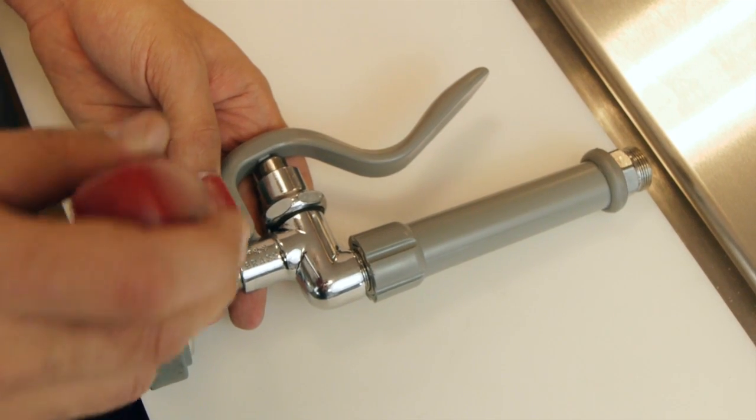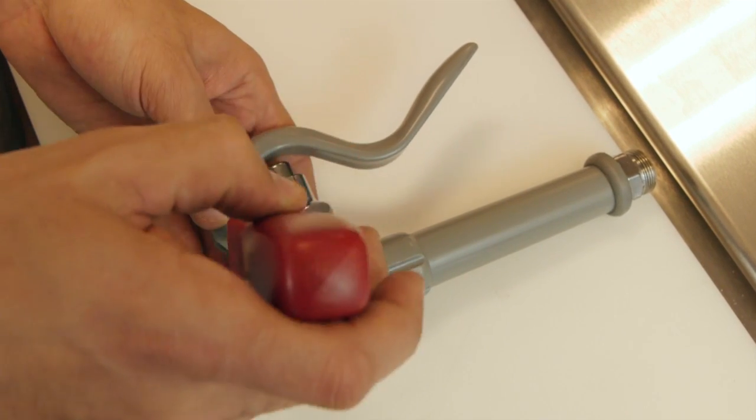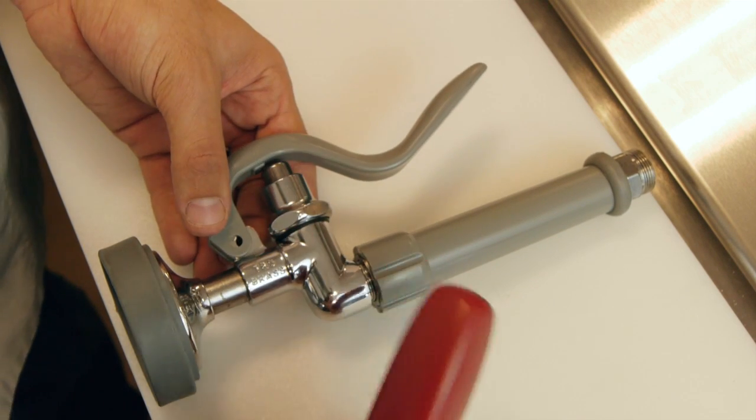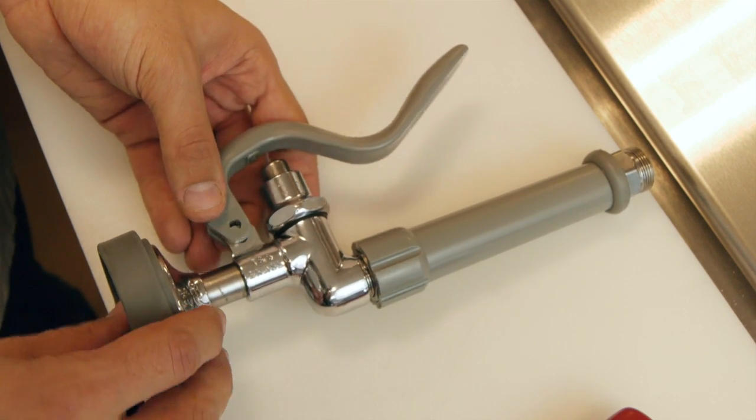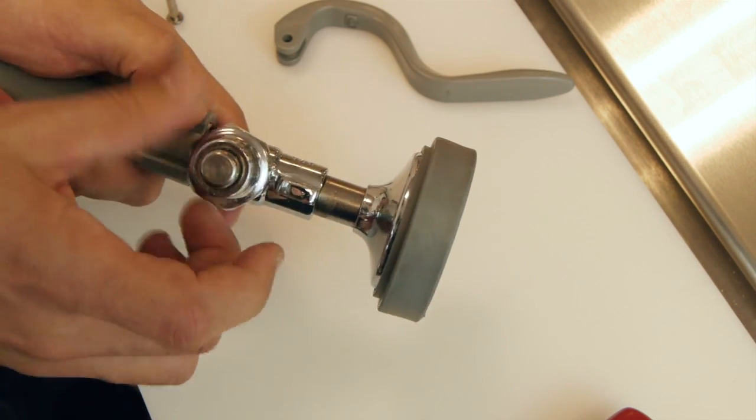You're going to remove the handle with a Phillips screwdriver. There are two Phillips screws, so you're going to need one to anchor the other on the other side. Once you remove that handle, you can go ahead and begin to unscrew this piece.